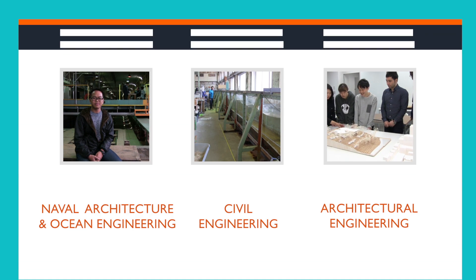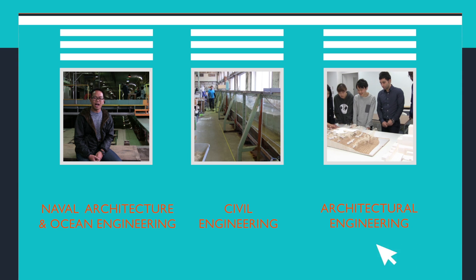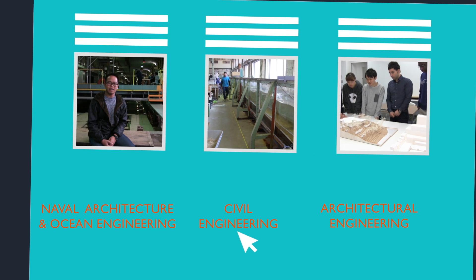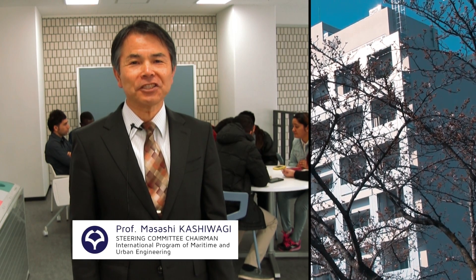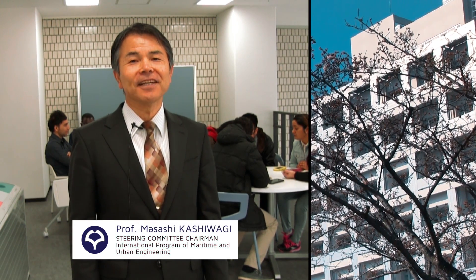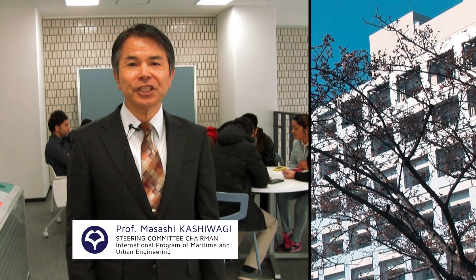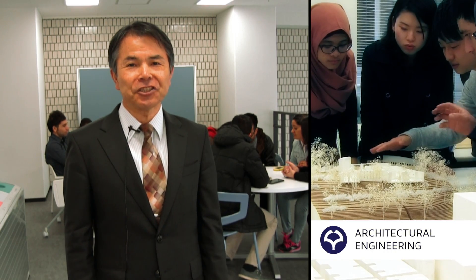Thank you for joining us. The Division of Global Architecture at the Graduate School of Osaka University is comprised of three departments: Naval Architecture and Ocean Engineering, Civil Engineering, and Architectural Engineering.